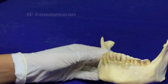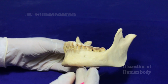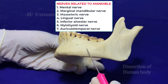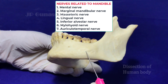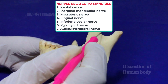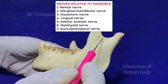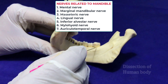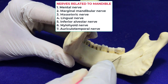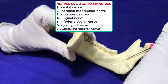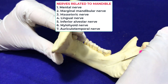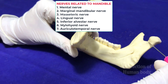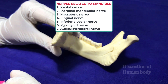To summarize the nerves related to the mandible: at the mental foramen are the mental nerve and vessels; on the outer surface of the body is the marginal mandibular nerve; related to the mandibular notch is the masseteric nerve; related to the area below the third molar and above the mylohyoid line is the lingual nerve; passing through the mandibular foramen is the inferior alveolar nerve; through the mylohyoid groove is the mylohyoid nerve; and behind the neck of the mandible is the auriculotemporal nerve.